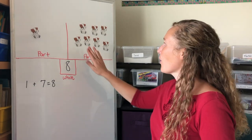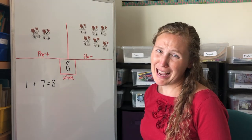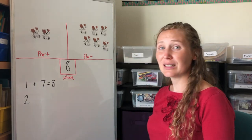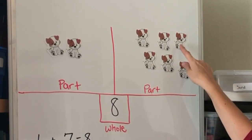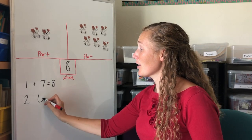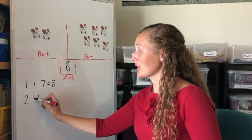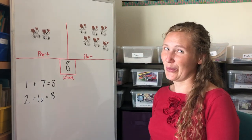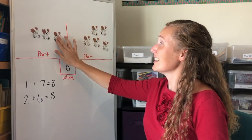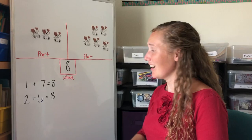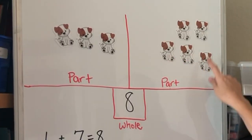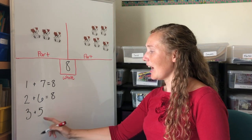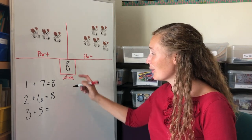Let's do it again. What if we were to move a dog — he has a friend — to this part of the board? Two dogs over here, and that part of my board plus one, two, three, four, five, six — six dogs on that part of the board. Two plus six equals my whole, which is eight. What if we move another dog over? Now there's one, two, three on that part of the board and one, two, three, four, five on that part of the board. That means three plus five equals our whole, which is eight.